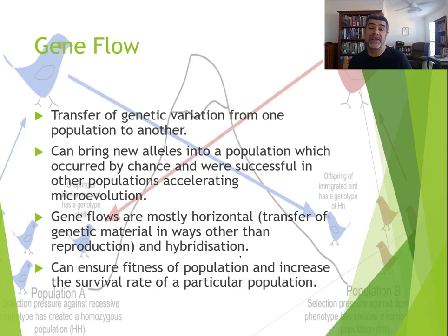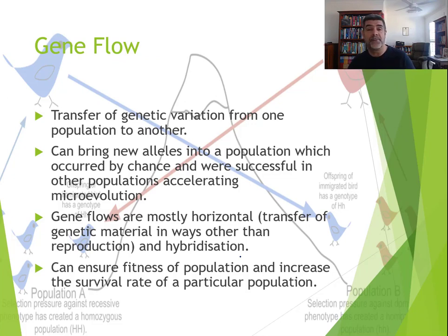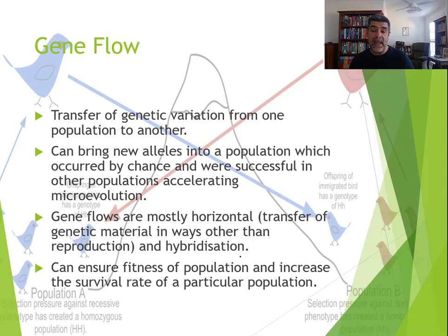One of the ways this can happen is a phenomenon known as gene flow — the transfer of genetic information from one population to another. Often the populations have been separated by some sort of barrier; it could be a geographical barrier like the mountain you can see in the back of this slide. If two populations are separated for some time and then breed within their individual populations, they can speciate.